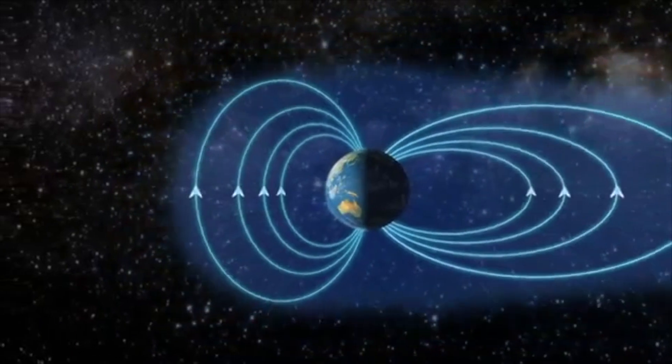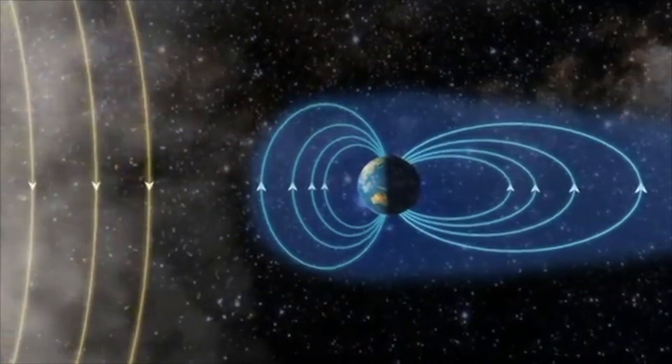An invisible shield, the Earth's magnetic field, deflects the storm.